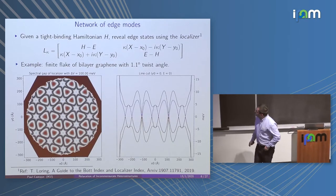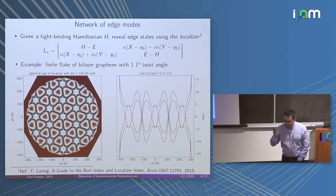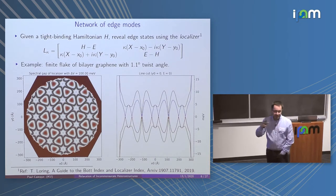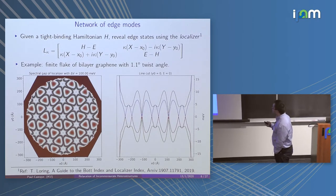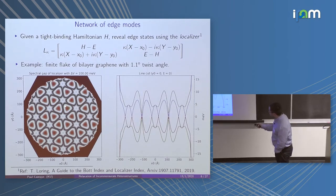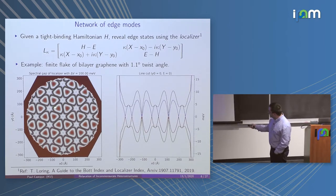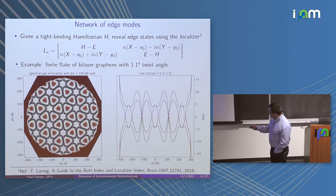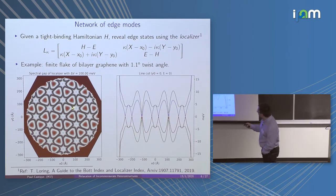When we introduce this interlayer potential difference, it's known that the AB and BA structures have a gap. What happens in practice is that the structure has triangular domains of AB and BA, and there we have a gap which is here in red. Between those domains there are edge modes that appear and form essentially a network of domain walls.